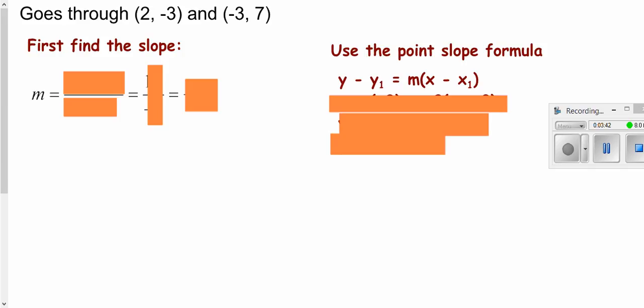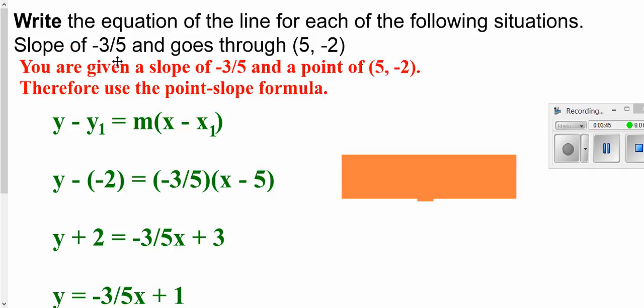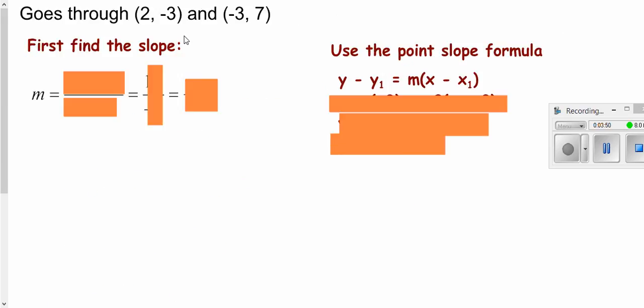Now that was a situation where you were given one point and you were given your slope. If you're not given your slope you need to first figure out that slope. So here we're not given our slope, we're just given two points. So we're going to use our slope formula. We're going to do the change in our y values over the changes in our x values. So I'm going to take my y of 7 minus my other y of negative 3 over my x minus my other x. So I'll simplify the top, simplify the bottom and I get a slope of negative 2.